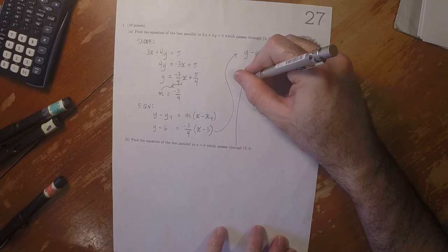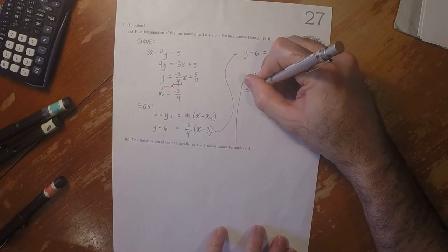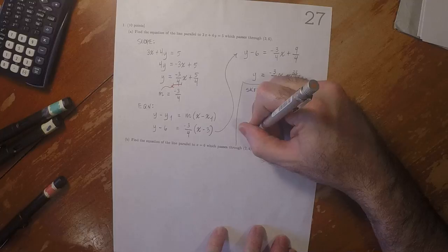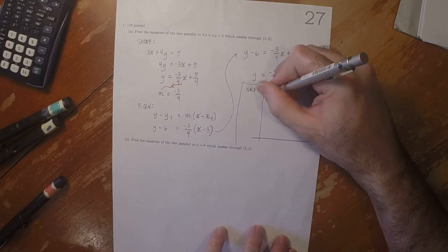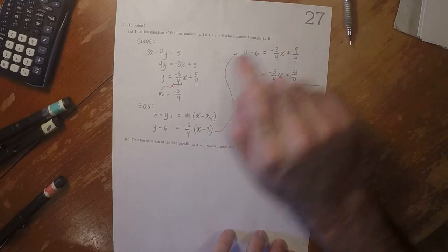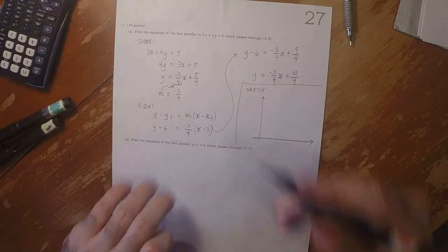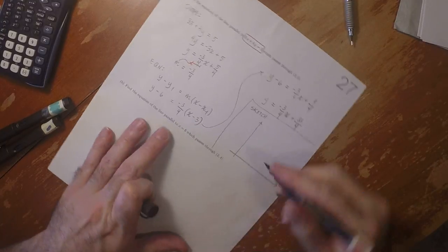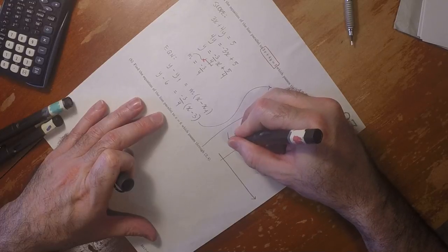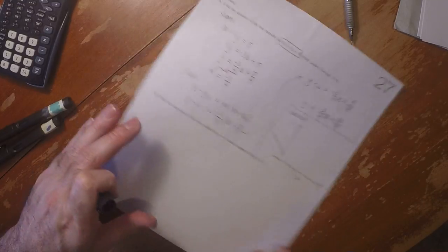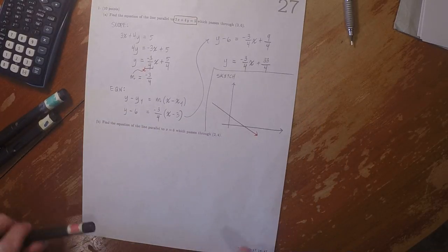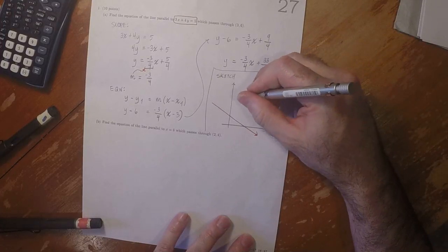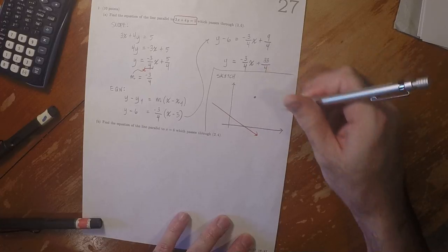That's the answer to the question, but just as a brief sketch, we were given a red line which does something like this. And we were requested to find another line which passes through this point up here. So 3, 6. And we found it.